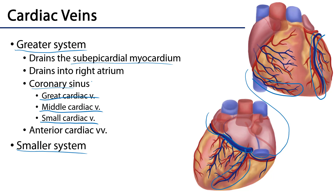There are also anterior cardiac veins. These anterior cardiac veins are quite unique in that they drain the wall of the right ventricle, but they don't typically feed into the coronary sinus. They can from time to time feed into the small cardiac vein, but usually they drain independently into the right atrium. Upon dissection you can usually identify these because they're bridging over the RCA within the coronary sulcus.